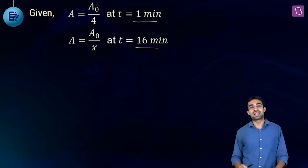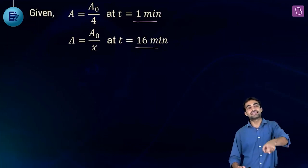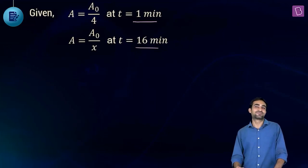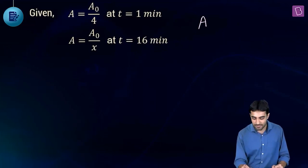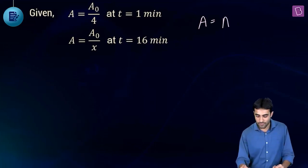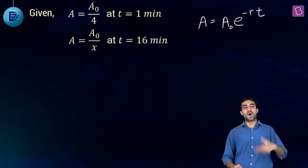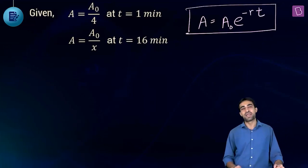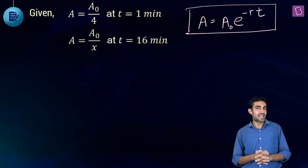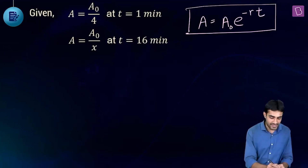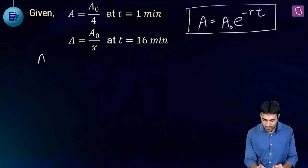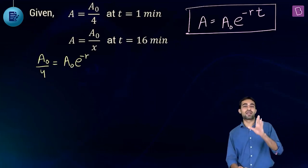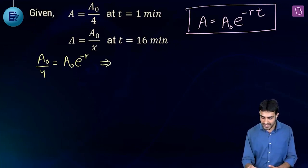In damped harmonic oscillation, the amplitude decreases exponentially with time: A = A₀·e^(−Rt), where R is a decay constant and time is in minutes. At t = 1: A₀/4 = A₀·e^(−R·1). This gives e^R = 4. This is our first equation.